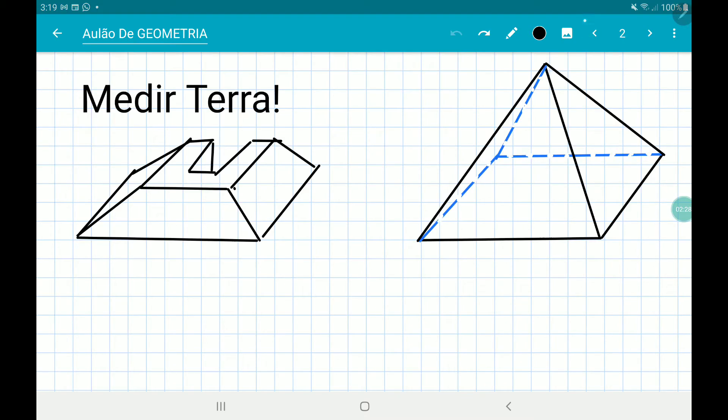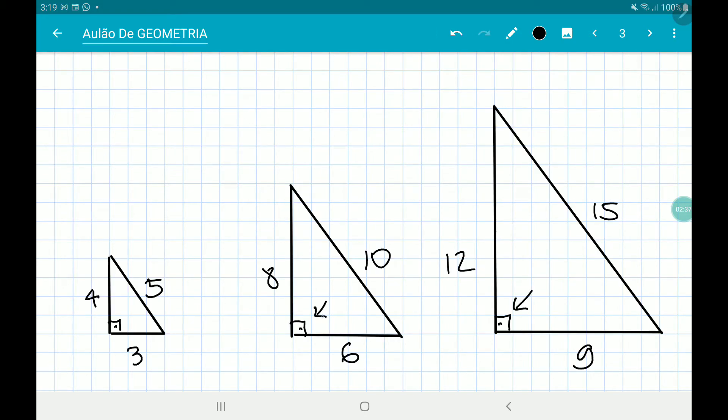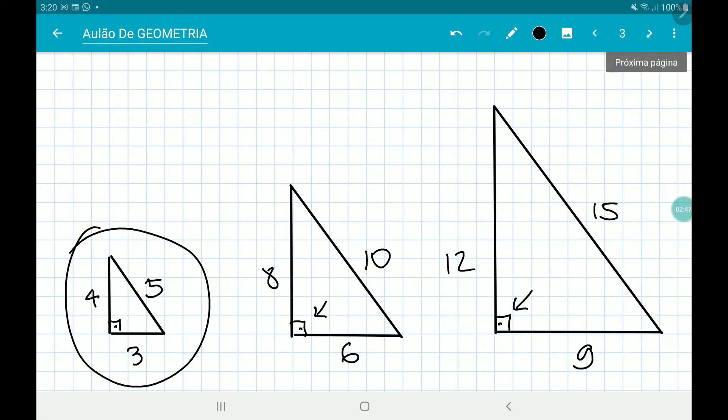So if you want to build something as precise as a pyramid, you need to know how to find a 90-degree angle. The way they did it is to find proportions of 3, 4, and 5. When you know this, you can measure the area of different shapes.